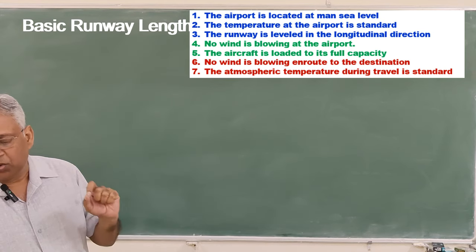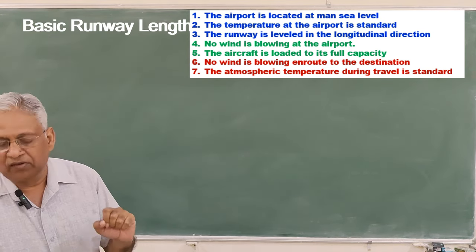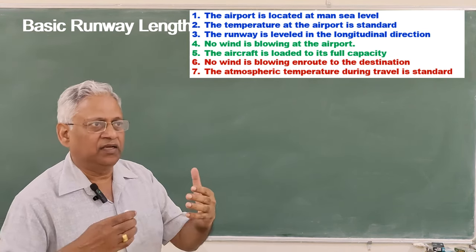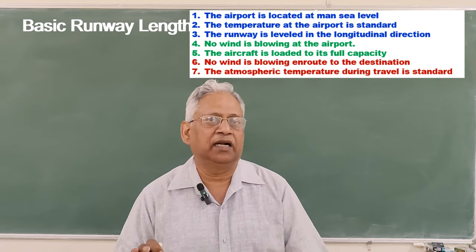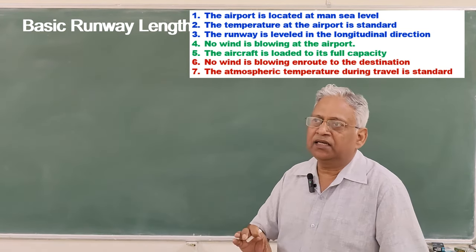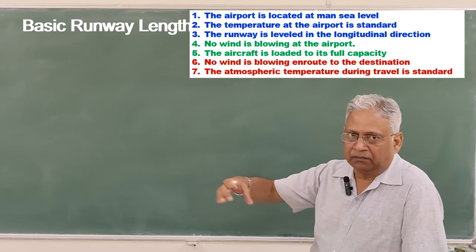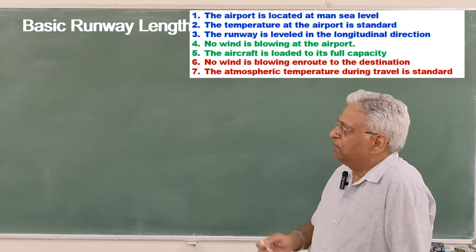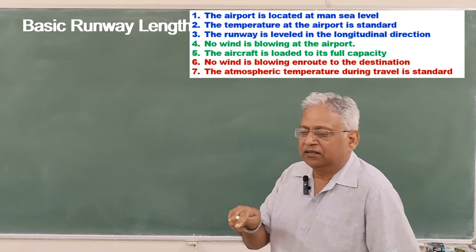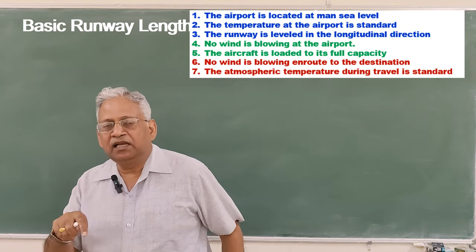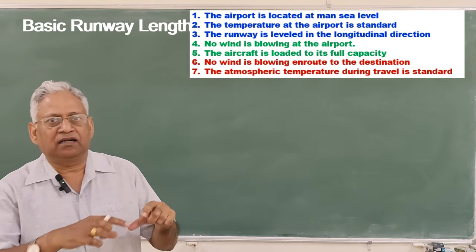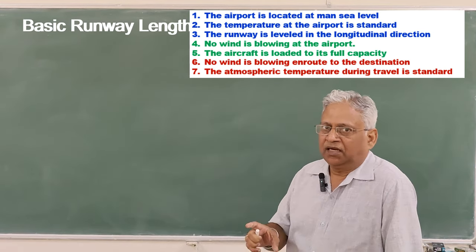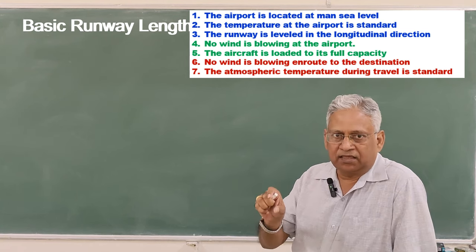The next two conditions — no wind blowing on the runway and aircraft loaded to full capacity — are conservative conditions: the lift provided to the aircraft will be minimum when there is no wind, and the runway length required will be maximum when the aircraft is at full capacity. But the first three conditions — runway at mean sea level, standard temperature, and leveled runway — are three conditions which are never met, and therefore basic runway length is always corrected for these three conditions.